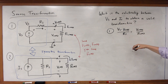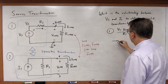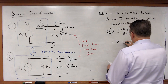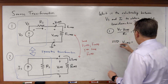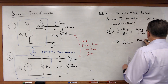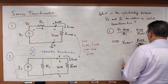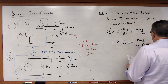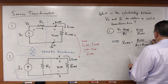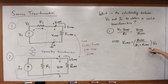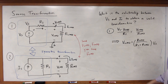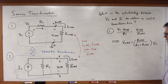Therefore, VS minus V-load over RS must be equal to V-load over R-load. After a little algebra, this leads to the equation: V-load equals R-load over (RS plus R-load) times VS. Some of you may recognize this is nothing more than the voltage divider equation.